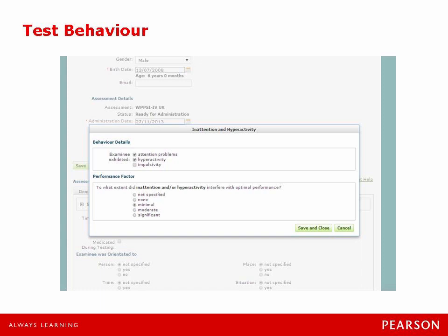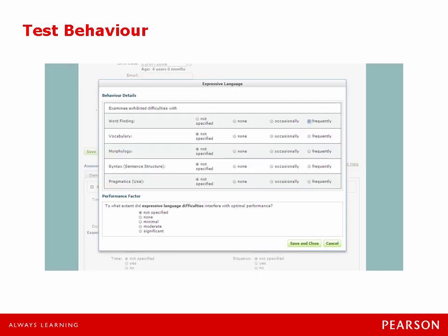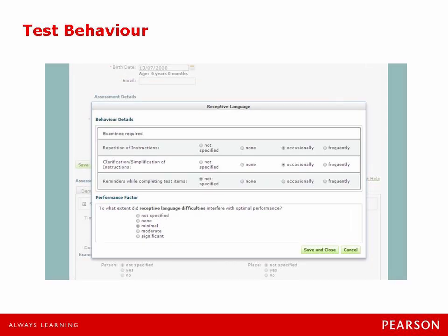It does allow you to go back and edit the information if you want to change it. In addition to inattention and hyperactivity we know that he had difficulties with his expressive language — he had frequent difficulty with word finding throughout the tests. In addition to those two difficulties we know that Charlie had some receptive language difficulties during testing. In this area he required some occasional repetition of instructions and occasional clarification or simplification of instructions. We did feel that these difficulties of receptive language could have mildly affected his performance on the verbal tasks that involve answering questions presented orally.